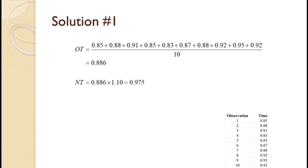A rating of 1.1 means the worker worked 110% as hard as a generic or normal worker. Thus if it takes a high-performing worker 0.886 minute to perform the job, it would take a normal worker longer, or 0.975 minute. Had the worker been rated at less than 100%, then the resulting normal time would have been less than the observed time.